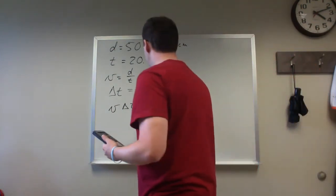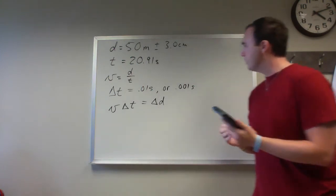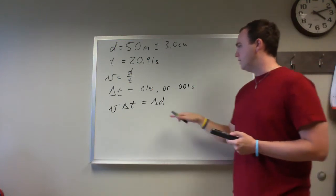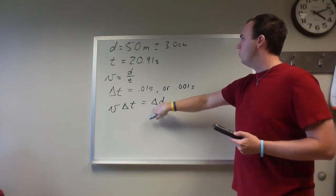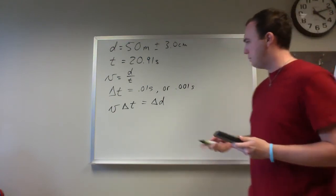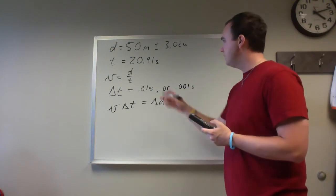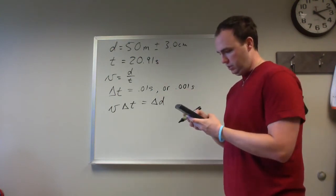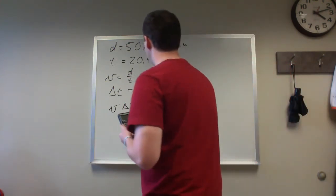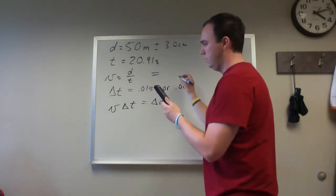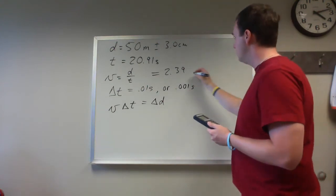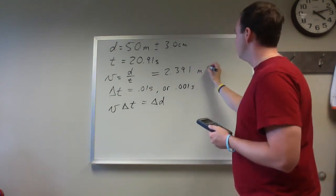So this will give me, we can call this a delta d, and then we want to compare that delta d to this number here. If we have a delta d that is well outside of this, then we can say that our timing is pretty good. But if it's inside, then we can't time any better. So our velocity, we'll take 50 meters and divide it by 20.91 seconds, and that gives us our velocity is 2.391 meters per second.